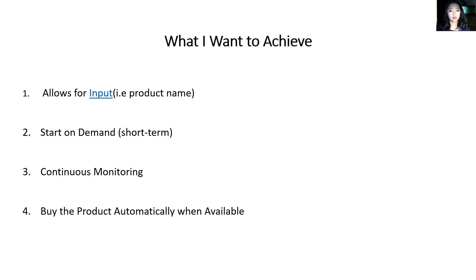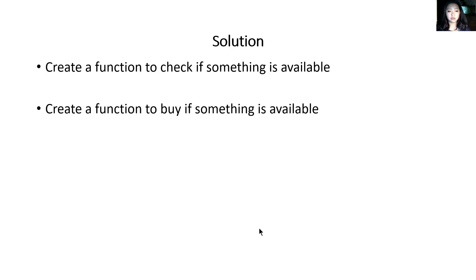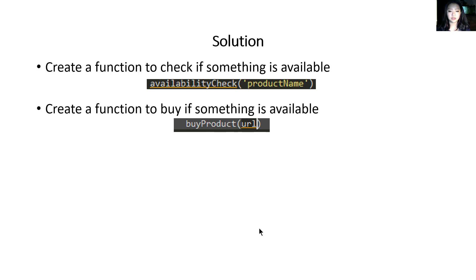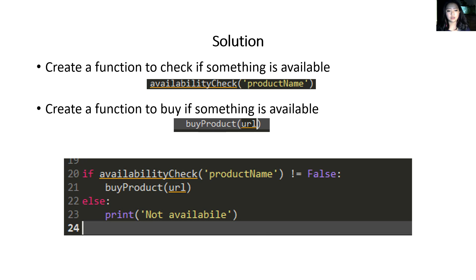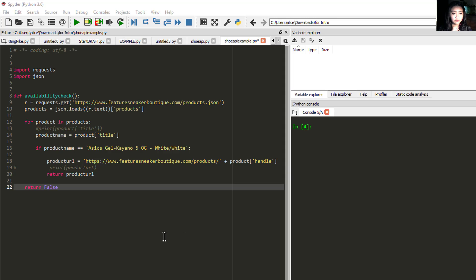So last time we talked about how the bot should be able to monitor a certain product we're looking for on futuresneakerboutiques.com, and should be able to purchase that product automatically when it becomes available. To do that we decided to go with two functions: one is an availability check, and another function is the action of purchasing the product. The logic goes: if something is available, then I should be able to purchase that product; otherwise I would simply print 'not available.' We're going to cover the buy-product function and how to build it.